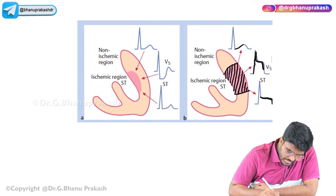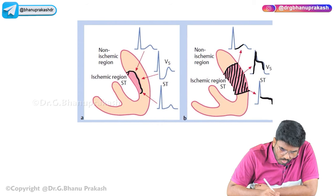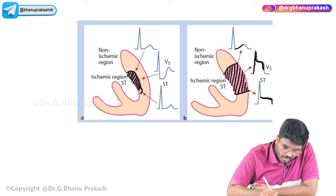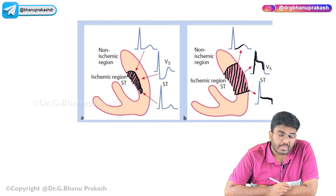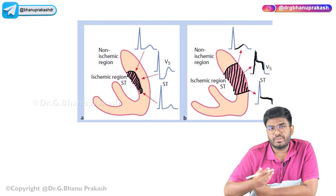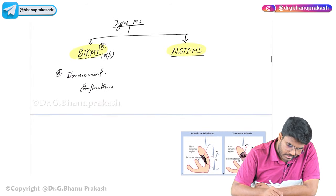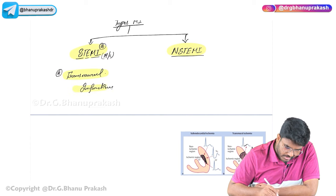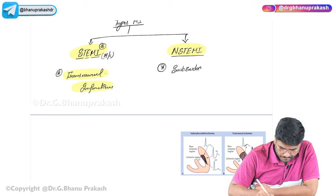In non-STEMI, only the subendocardial region is getting ischemia and infarction - it is not transmural. In this case, the ST segment is not elevated; sometimes you can even see ST segment depression. So in STEMI there is transmural infarction, and in non-STEMI there is subendocardial infarction.